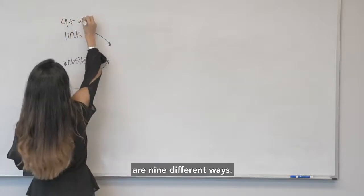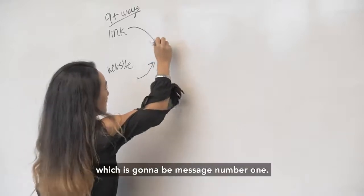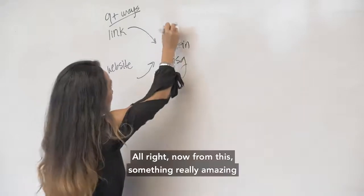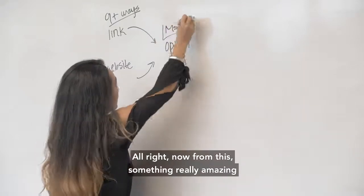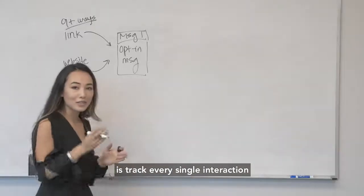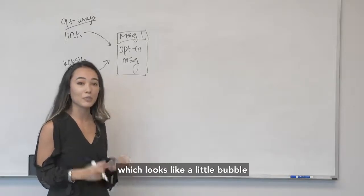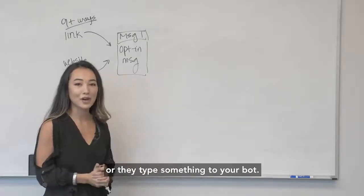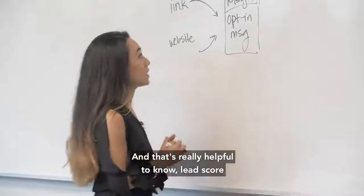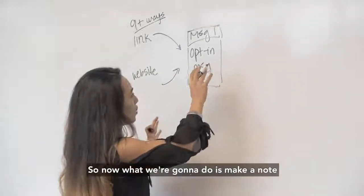Now that we've opted people in, first we're going to send people to the opt-in message, which is going to be message number one. Something really amazing that you can do with Messenger is track every single interaction that someone has with your bot—whether they click on a button, they click on something called a quick reply which looks like a little bubble at the bottom of the conversation, or they type something to your bot. All of those can be tracked and that's really helpful to know lead score and how many touchpoints it took for someone to buy.